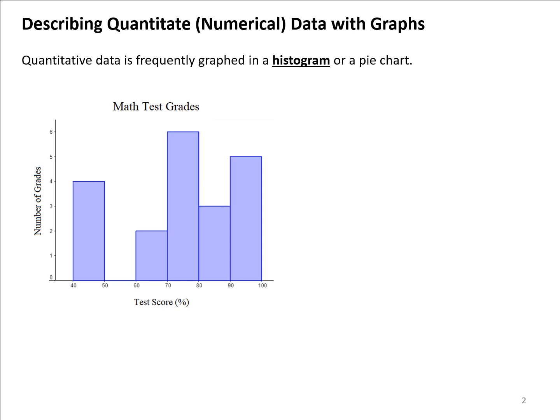Now describing quantitative data with graphs: usually what someone's going to do is create what we call a histogram. It is possible they might do a pie chart, but a histogram is generally what you'll see.